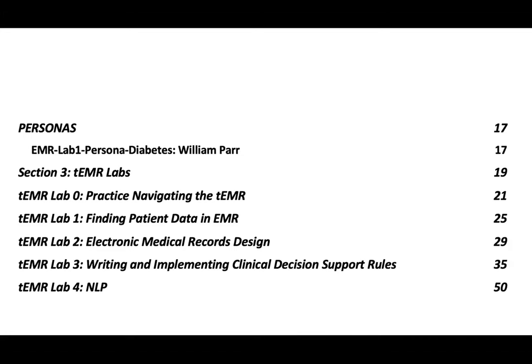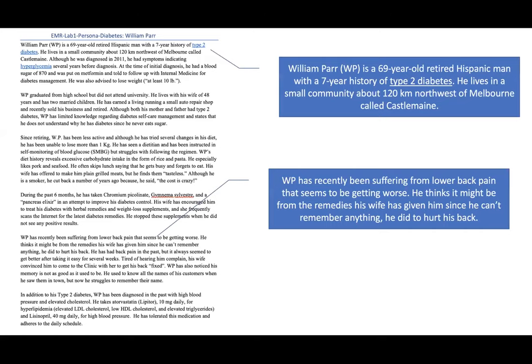The persona is William Parr — he has Type 2 diabetes, and we modified it slightly to place him in Melbourne, though a Hispanic man in that setting isn't entirely believable. He's been suffering from lower back pain that's getting worse. This is based on the actual patient and what's in his record, so students learn about the patient contextually. The first lab is really about how to find patient data in an EMR, which is an eye-opener for many people.